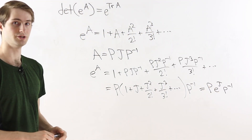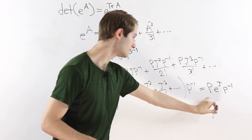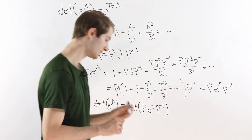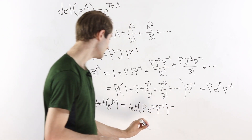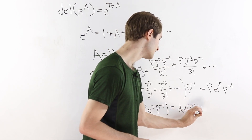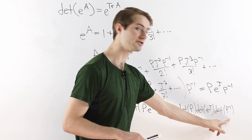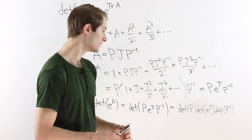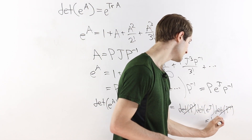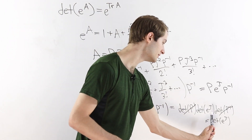Now we return to the question: what is the determinant of e to the A? The determinant of e to the A equals the determinant of p times e to the J times p inverse. Since the determinant is multiplicative, this equals the determinant of p times the determinant of e to the J times the determinant of p inverse. The determinant of p inverse is 1 over the determinant of p, so those cancel, leaving just the determinant of e to the J.